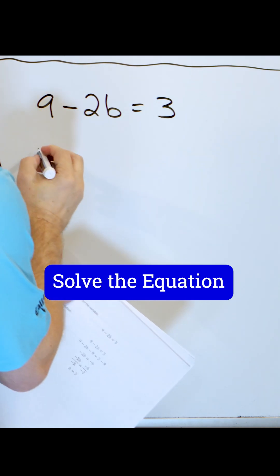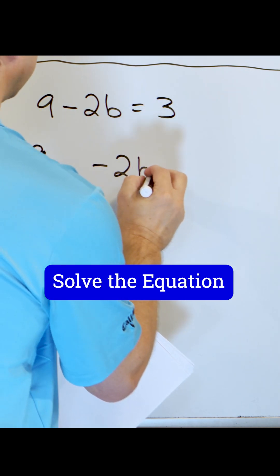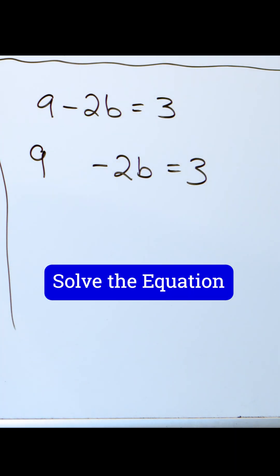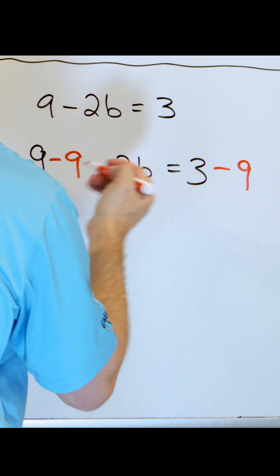What I have is a positive nine right here. So I'm gonna make room here. I have a positive nine. I wanna get rid of that by subtracting nine. And I'll subtract nine right here.